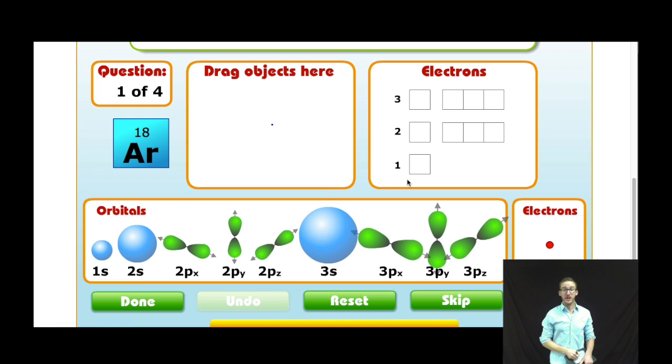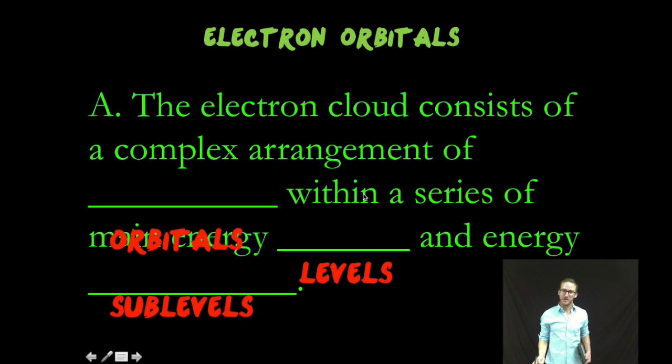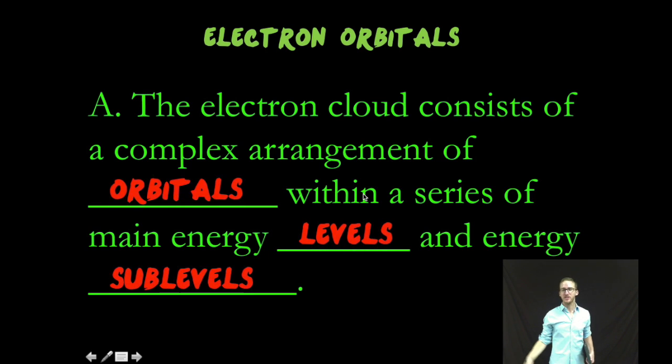Now, throughout this video, I'm going to use this as my model of the atom, where this teeny tiny blue dot represents the nucleus, and all of this emptiness represents the electron cloud. And we'll get to all these fun things. Please stay seated. So as it turns out, the electron cloud consists of a complex arrangement of orbitals within a series of main energy levels and energy sublevels.